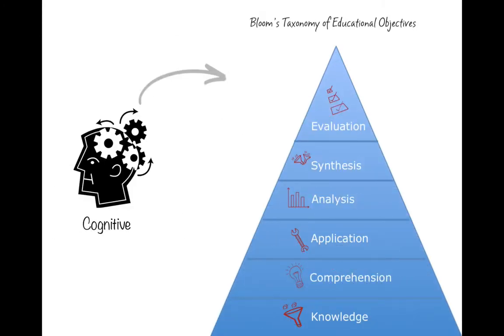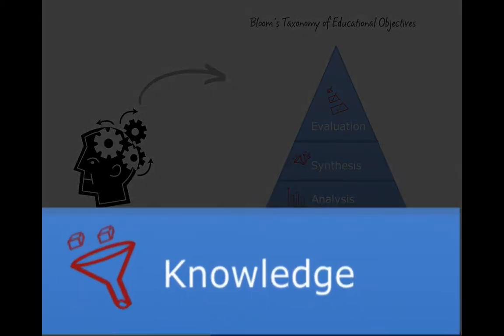Within the cognitive domain, Bloom further proposed a six-level taxonomy with the levels moving from simple cognitive tasks to complex ones. Mastery of each level is a prerequisite for the mastery of the next complex one. The six levels are knowledge or recall and recognition of facts, basic concepts, definitions, classifications, theories, etc.